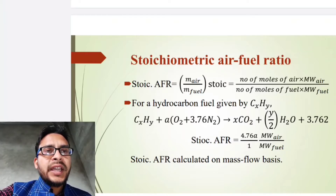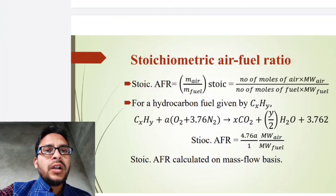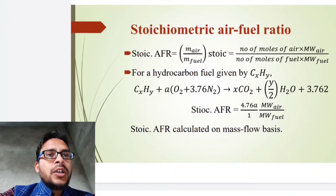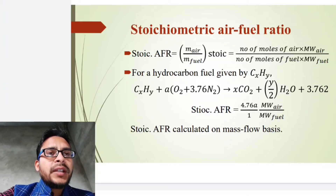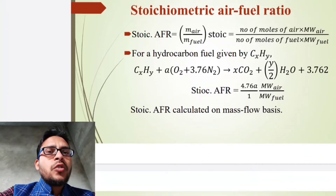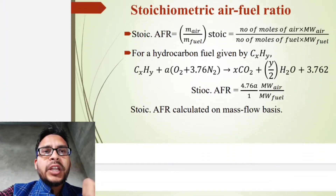Here we are considering that air contains 79% N₂ and 21% O₂. Now calculating the stoichiometric air-fuel ratio: the number of moles of air will be (3.76 + 1) × A, which equals 4.76A, upon the number of moles of fuel which is equal to 1. Then multiply by the molecular weight of air upon molecular weight of fuel. This stoichiometric air-fuel ratio is calculated on a mass flow basis.